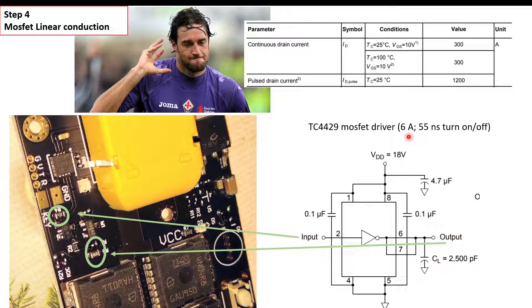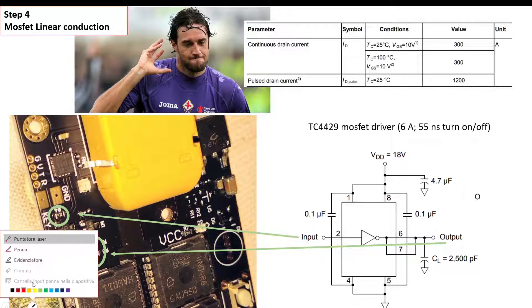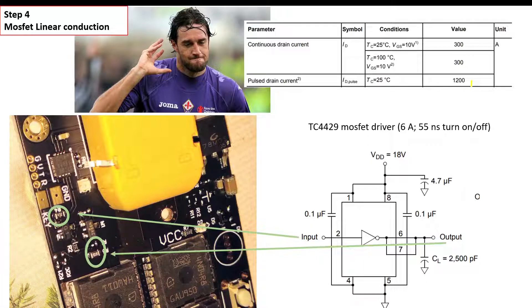With the turn-off and turn-on around the same time as the turn-on of the MOSFETs, we can reach our goal. Normally, the maximum single pulse of each MOSFET is around 1200 amps.